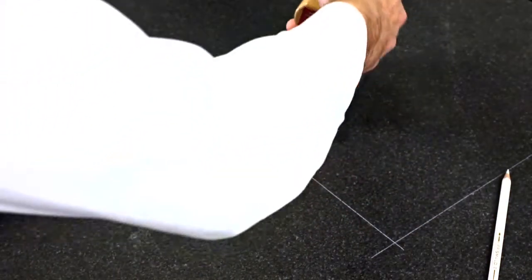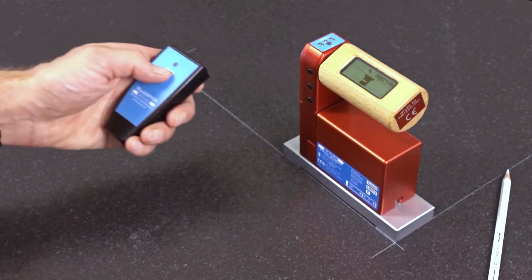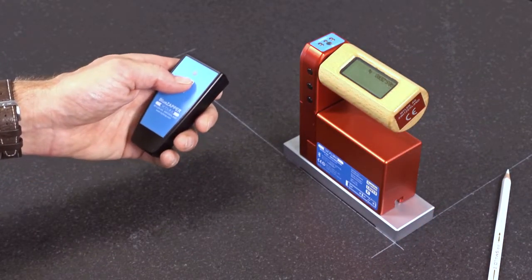Now I'm turning the instrument by 180 degrees in the horizontal, positioning it on the exactly same spot. Then I'm triggering the second measuring value with the Zappel.